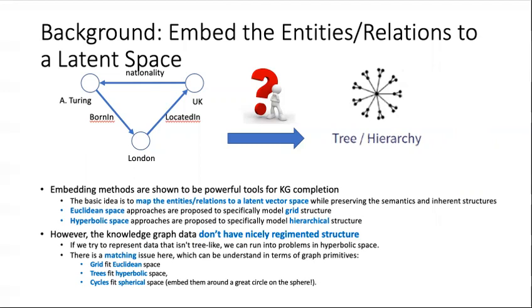However, knowledge graph data don't have nicely regimented structure. If we try to represent data that isn't tree-like, we can run into problems in hyperbolic space. So there is a matching issue here, which can be understood in terms of graph primitives: the grid fits the Euclidean space, trees fit the hyperbolic space, and cycles fit the spherical space.